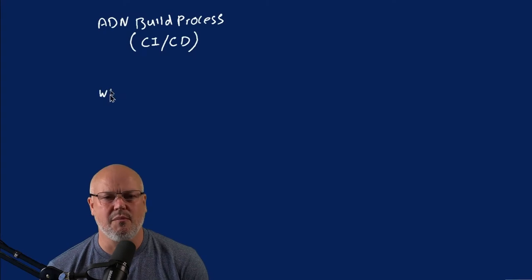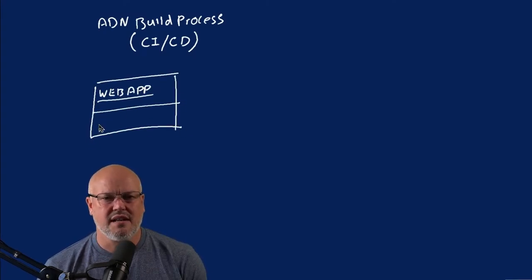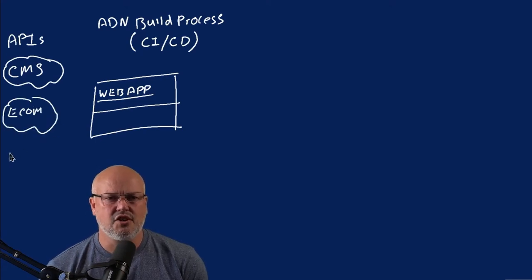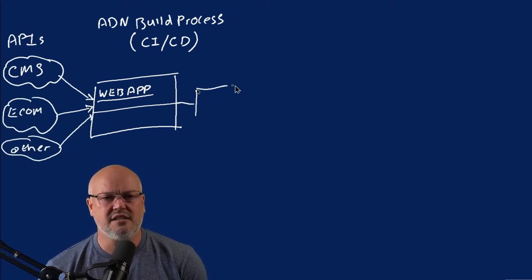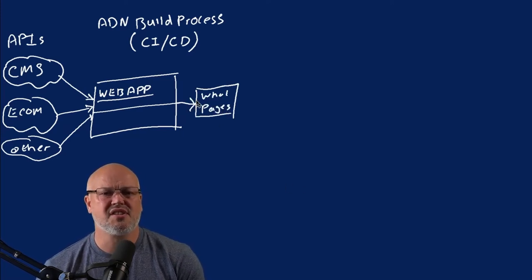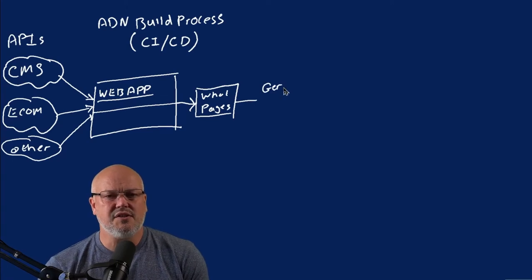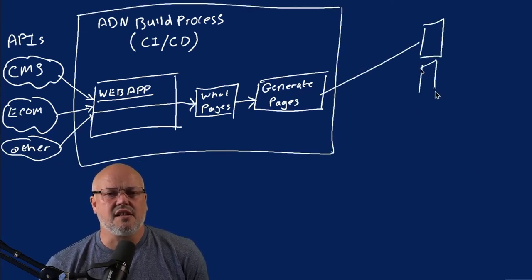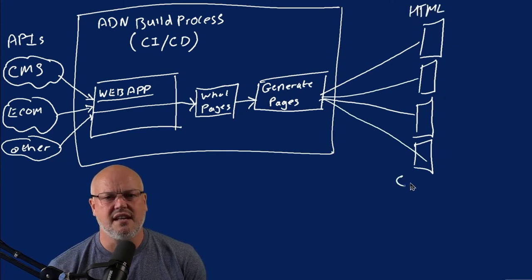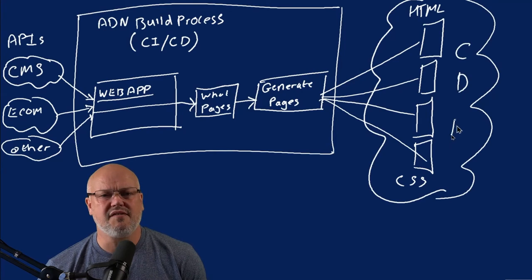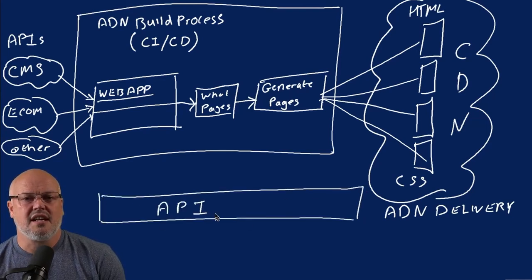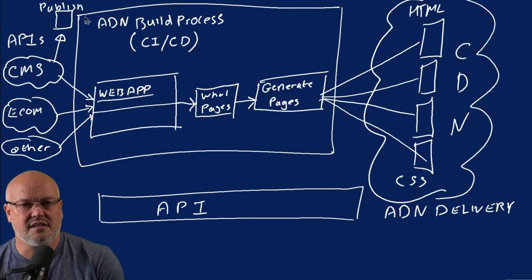The web application framework runs within the continuous integration and delivery process — an automated process that generates those static HTML and CSS files for your website. At the start of this process, the web application works out what pages need to be pre-rendered. If you have dynamic pages like those coming from a CMS, there are hooks in these frameworks that allow you to call out and get lists of pages from a CMS or even e-commerce platforms. Once the process has that list of pages, it pre-renders them and generates the static HTML and CSS files. Those files can then be pushed to the CDN. The whole process can be automated and triggered by an API, so you can connect your headless CMS — and when a page is published, trigger the whole process to regenerate those static pages.